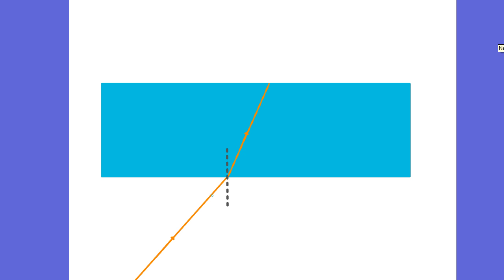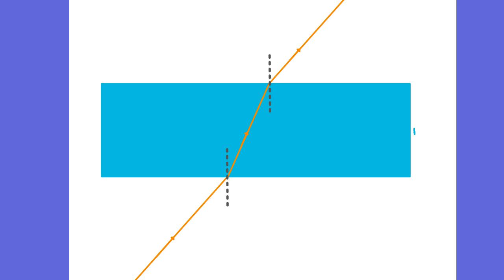The angle of incidence is about 30 degrees. Inside the glass, it's bent towards the normal, so the angle of refraction R is about 20 degrees. When we talk about bending towards the normal, you can see the ray has come closer to the normal line. When light goes from a high refractive index — the glass — to a low refractive index, it bends away from the normal.